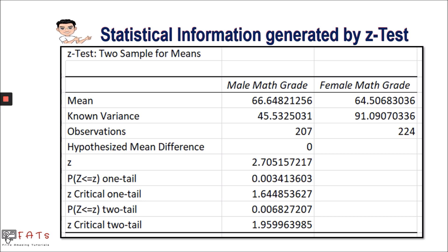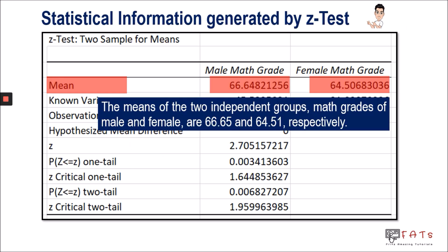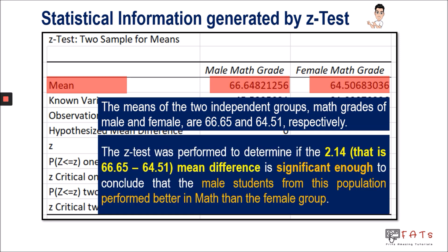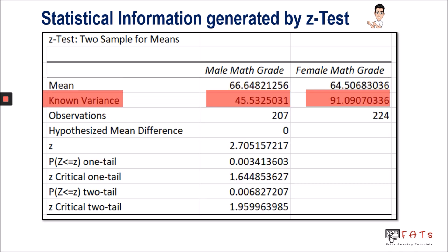The first information is the mean, which tells us that the average grade of the male group is 66.65 and the average grade in math of the female group is 64.51. We can say that probably the male group performs better than the female group because the male group has a higher mean. But the question is: why do we need to perform the z-test? We need to perform it to identify if the 2.14 mean difference is significant enough to conclude that male students perform better in math than the female group.